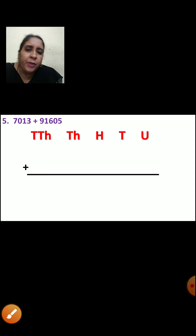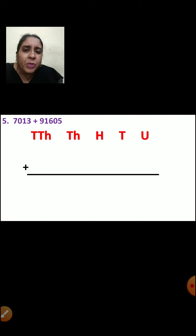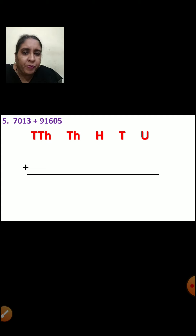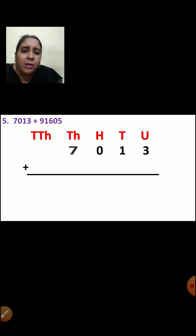Now let us do the fifth sum. The question is 7013 plus 91605. Again, one is a 4-digit number and the other is a 5-digit number. Now first you will write the place: units, tens, hundreds, thousands, ten-thousands. After writing the place, you are going to arrange the numbers vertically. Now 3 will come in units place, 1 will come in tens place, 0 will come in hundreds place, 7 will come in thousands place.